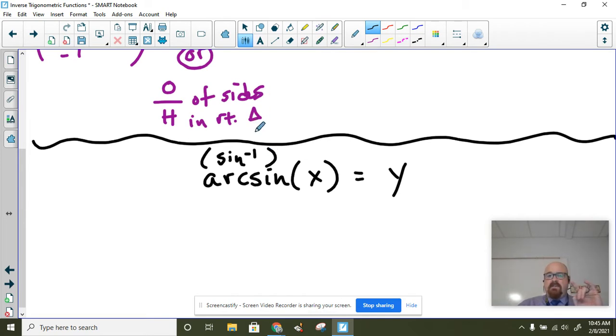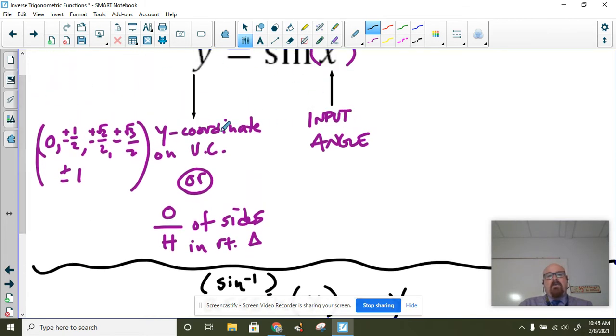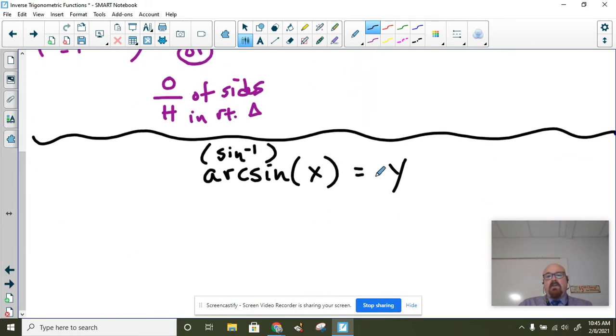When you talk about an inverse, when we talked about inverses early on in this course, we talked about how one way to define an inverse is to look at the x and y values of the function and flip them. Those became the x and y values of the inverse. The domain becomes the range, and the range becomes the domain. So when you look at the input and output of a sine function, this input—the angle that was an input to sine—is the output for arc sine.